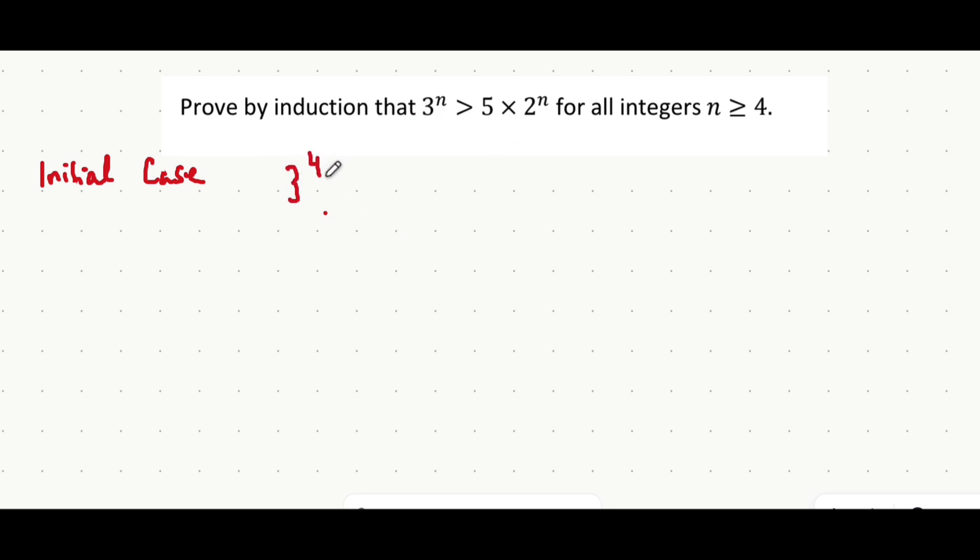3 to the power of 4, I'm sure you guys know that's 81. And if we substitute n equals 4 into the right hand side we get 5 multiplied by 2 to the power of 4. 2 to the power of 4 is equal to 16, and 5 times 16 is 80. And so it's clear to you guys that 81 is greater than 80, so the initial case is satisfied.